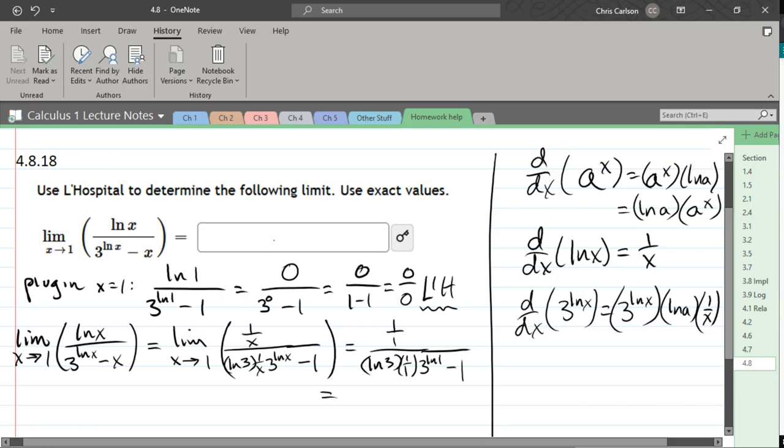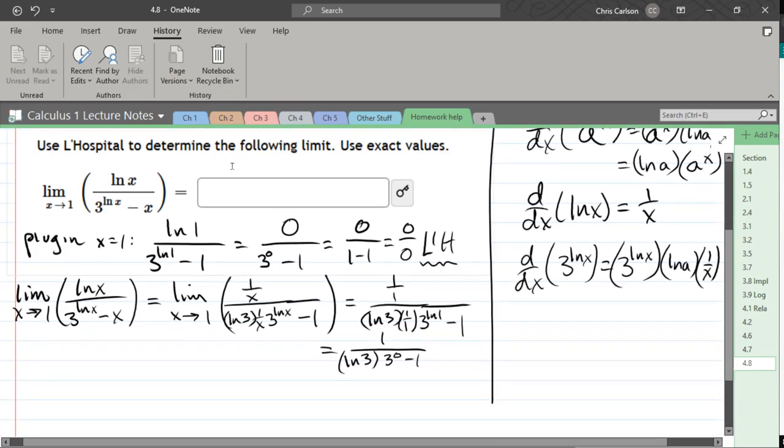So 1 over 1 is just 1, 3 to the ln of 1 is 3 to the 0. So we have ln 3 times 3 to the 0 minus 1. So it's 1 over ln 3, 3 to 0 is 1. So 1 over ln 3 minus 1.